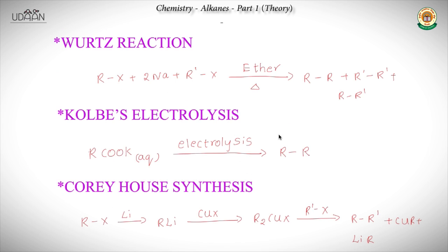One of the interesting reactions in the preparation of alkanes is Wurtz reaction. In this, we start with two alkyl halides - RX and R'X - and treat them with sodium in the presence of ether upon heating. This gives a mixture of products: R-R, R'-R', and R-R'. The ratio of products depends on whether R is primary, secondary, or tertiary. We'll discuss the details in the problems.